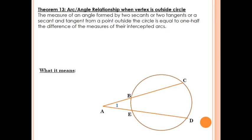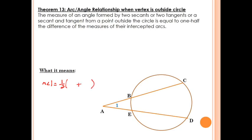Now let's look at our next theorem. Notice now we have two secants intersecting outside the circle at point A — different from what we just learned. The measure of an angle formed by two secants, two tangents, or a secant and a tangent from a point outside the circle equals one-half the difference of the measures of the intercepted arcs. It's the outer arc — the one furthest from our angle — minus the inner arc, multiplied by one-half.